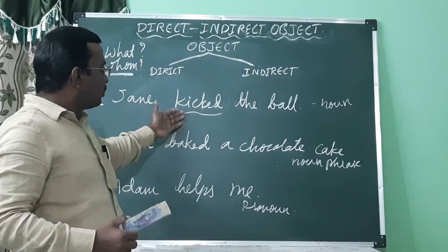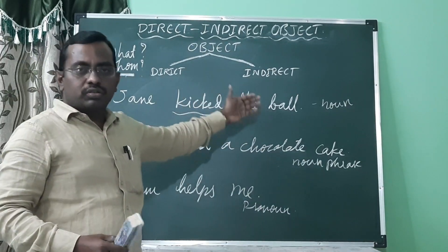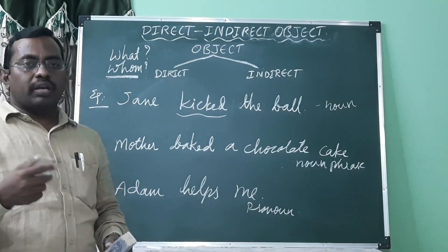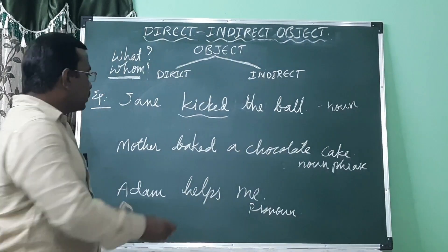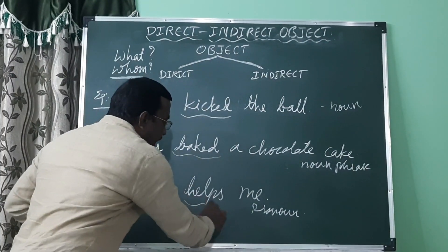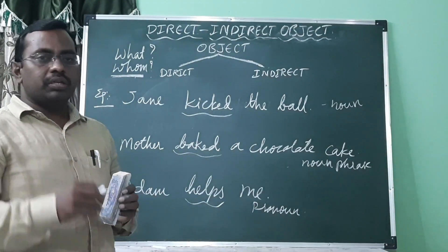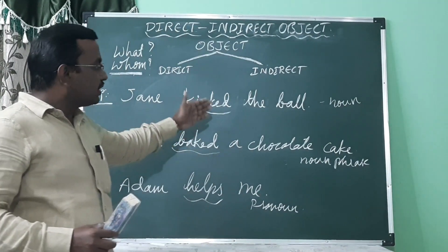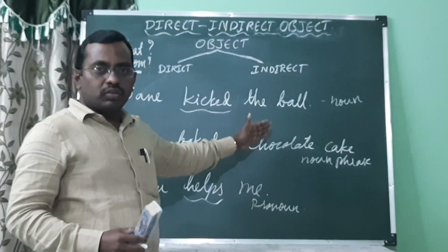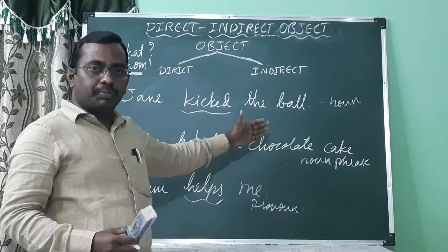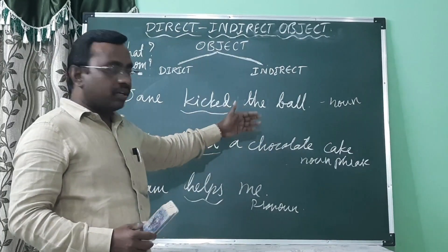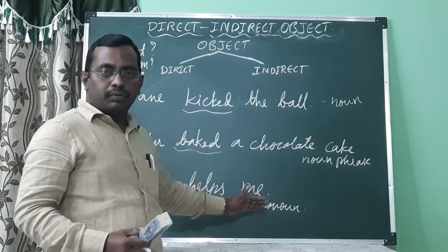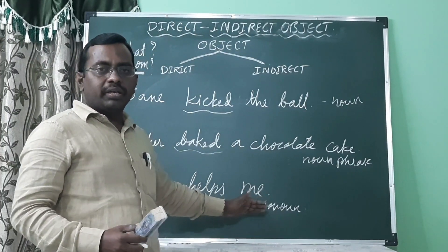In other words, the effect of the action — if the effect of the action falls on something or some person, that is the direct object. Whatever receives the action of a transitive verb is an object. That object can be a noun, a noun phrase, or a pronoun.